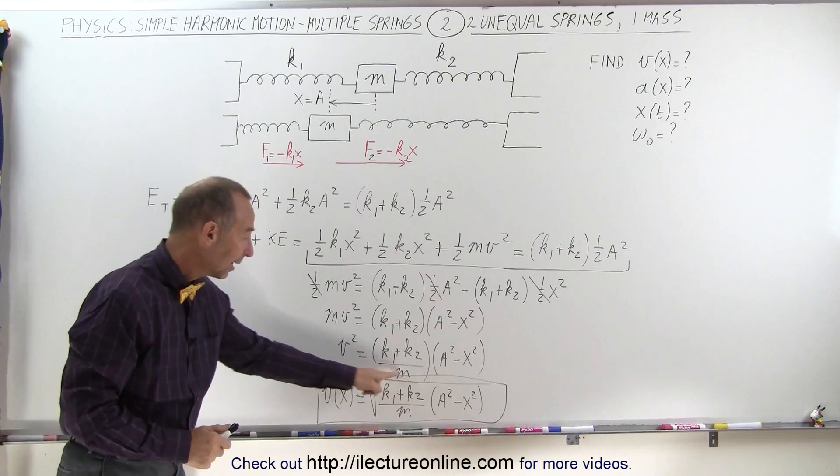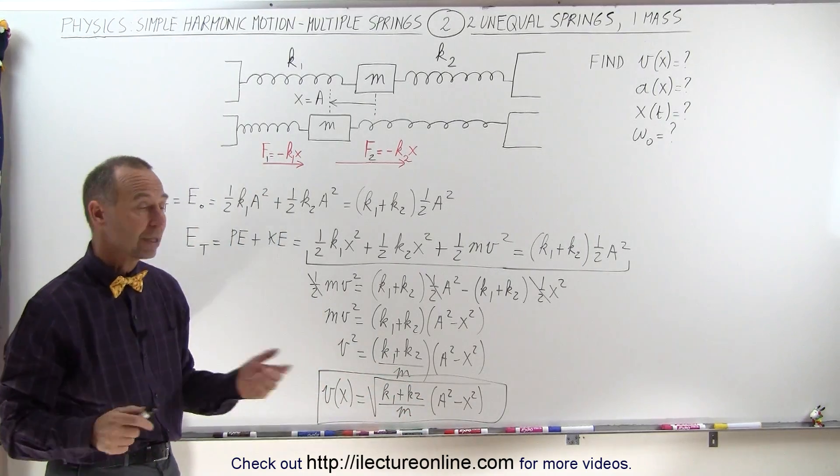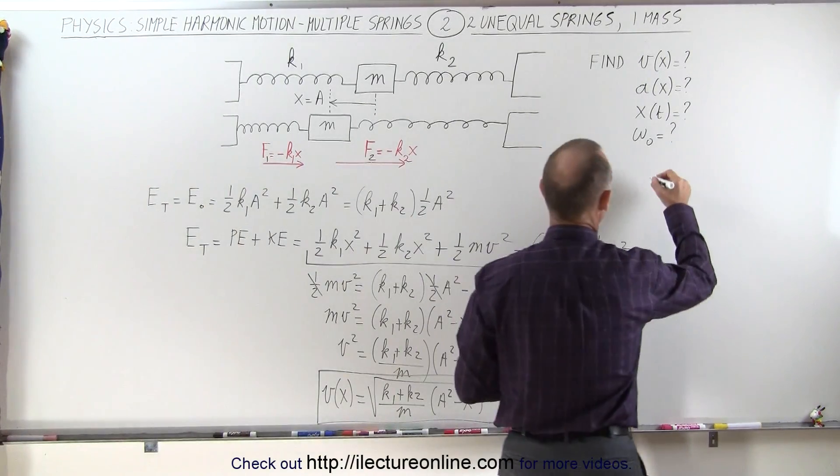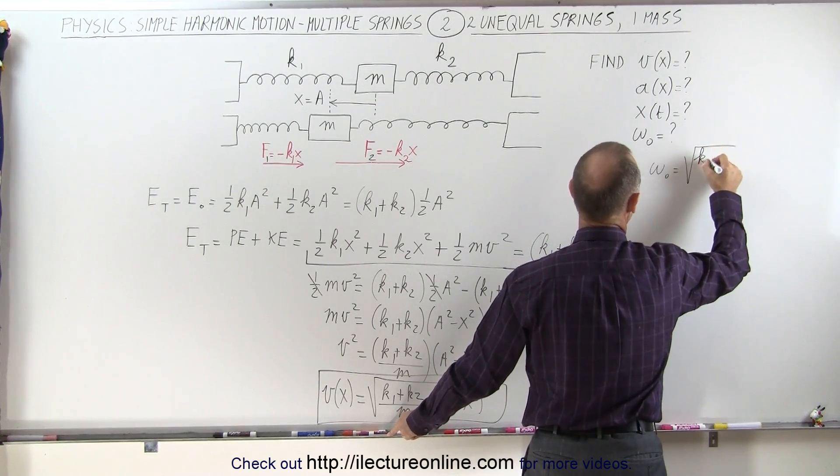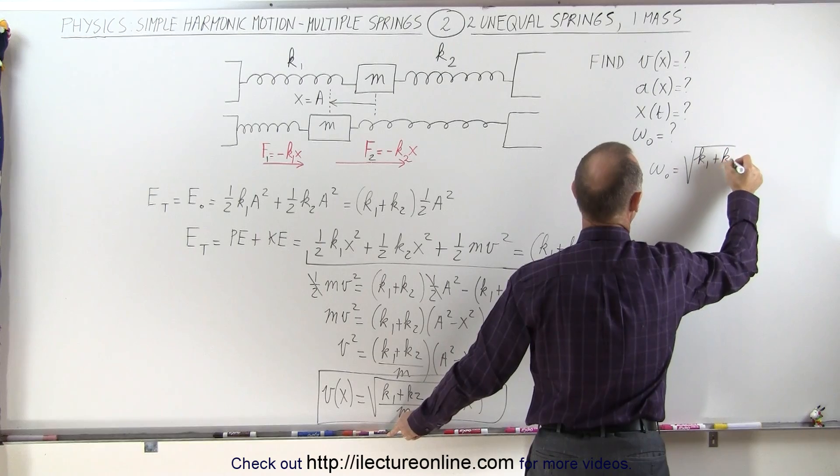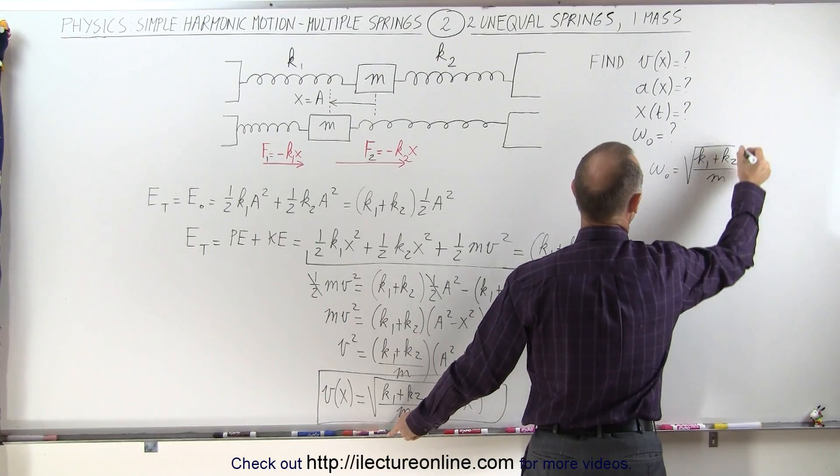Again, we realize now that this here represents the natural frequency of the system. So we can write that omega sub-naught is equal to the square root of the sum of the two k's, the spring constants, divided by the mass of the system.